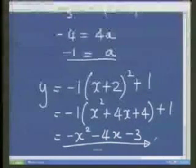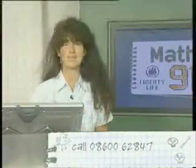So you've got two ways of finding the equation of the parabola, but you need to identify what you're given. Are you given x-intercepts or are you given the turning point? And then substitute into that equation and simplify.